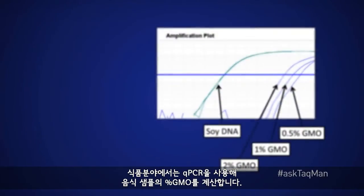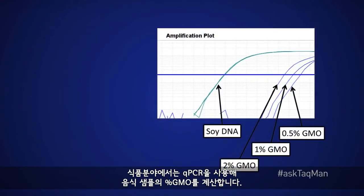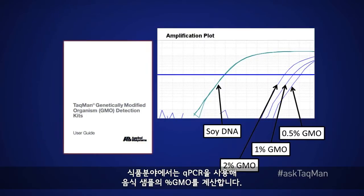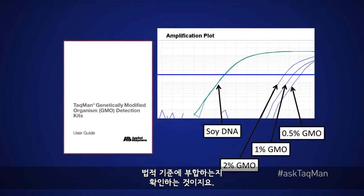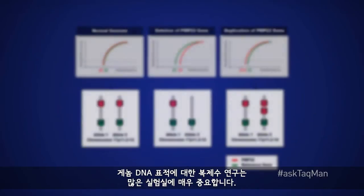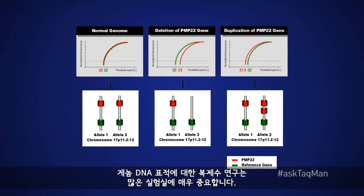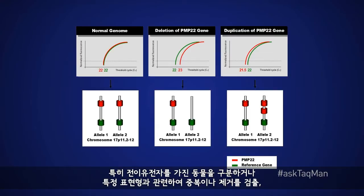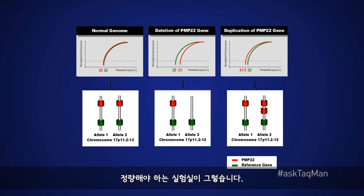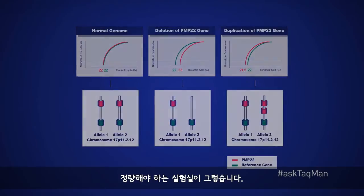Speaking of food, some labs use qPCR to calculate percent GMO in food samples in order to ensure that they meet legal standards. Copy number studies on genomic DNA targets are quite important to any number of labs, who typically need to either segregate animals with different copy numbers of a transgene, or to detect and quantify duplication or deletion events associated with a particular phenotype.